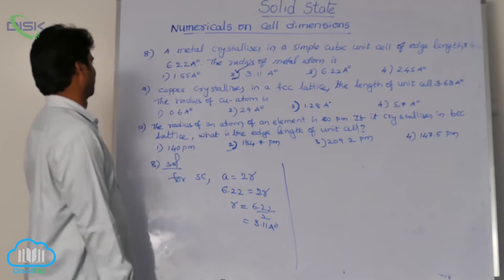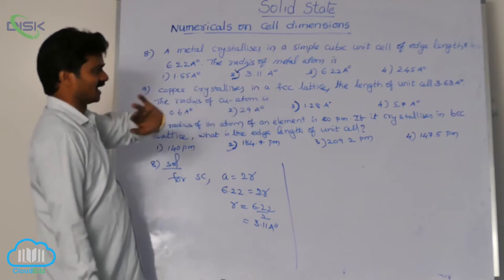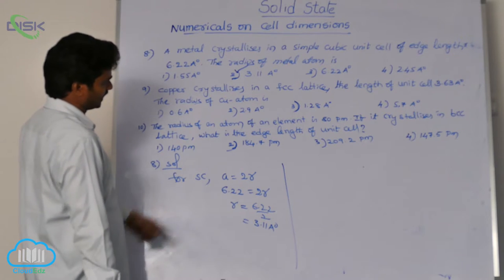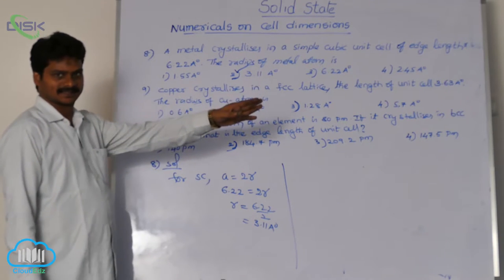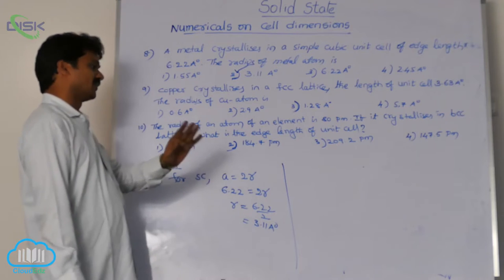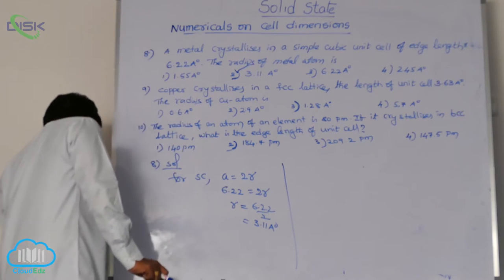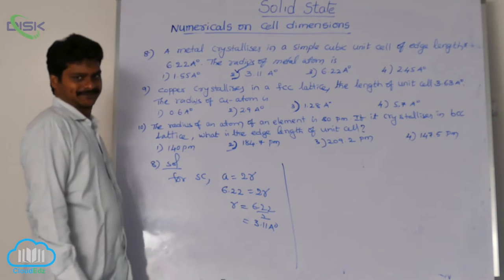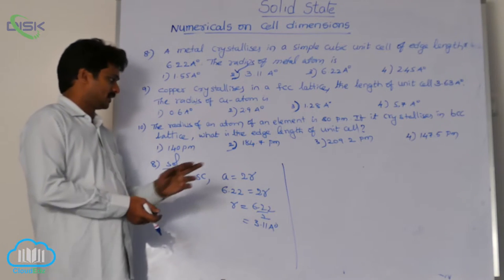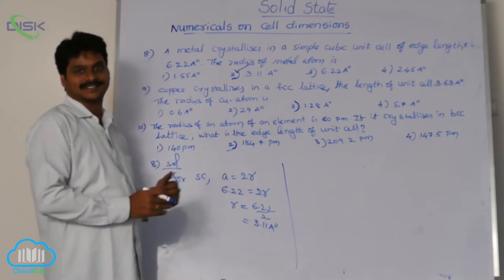Next, for the 9th question: copper crystallizes in an FCC lattice. The edge length of the unit cell is 3.63 angstrom units, and we are asked for the radius. Note that in a simple cube A = 2R, but this formula is not valid for FCC.